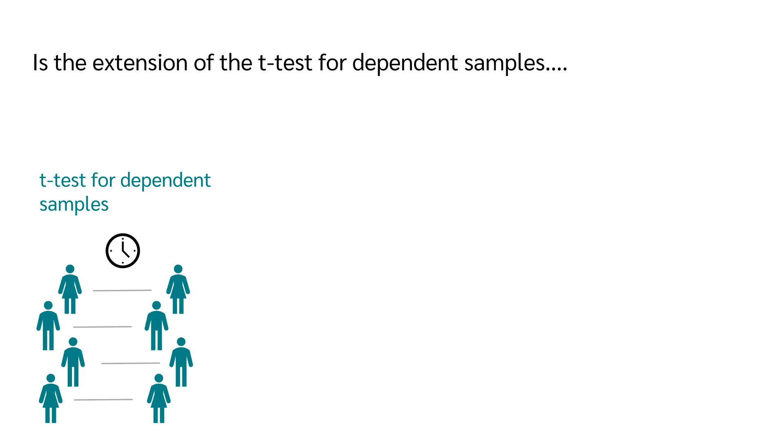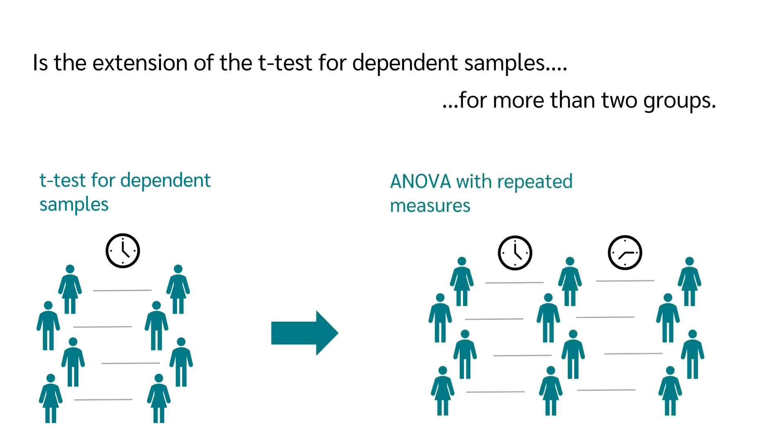Therefore, the one-factor analysis of variance with repeated measures is the extension of the t-test for dependent samples for more than two groups.